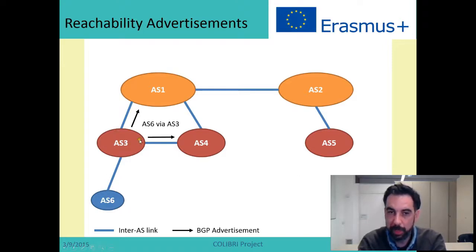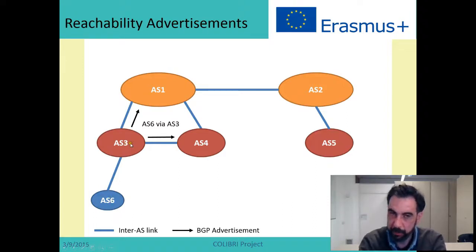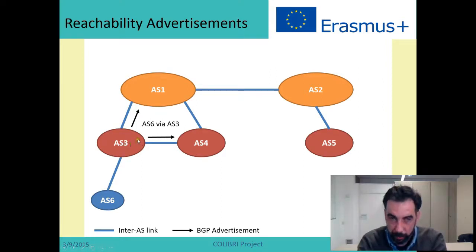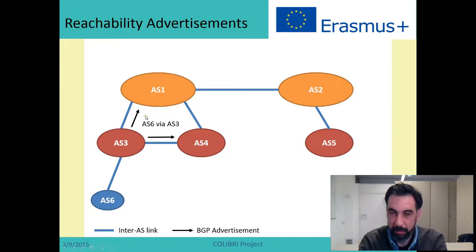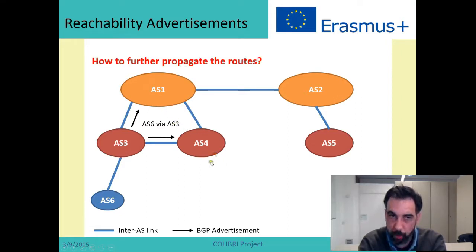What AS3 is telling to AS1 and AS4 is: I am a neighbor of AS6, so if you need to send packets to AS6, you can send them to me. This is typically a BGP update message. Now, what happens with AS4 or AS1 when they receive this message? How do they further propagate it?